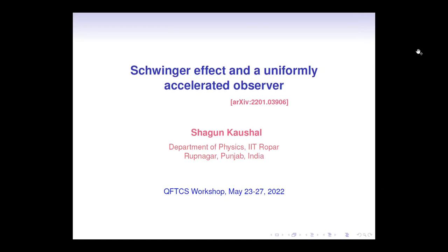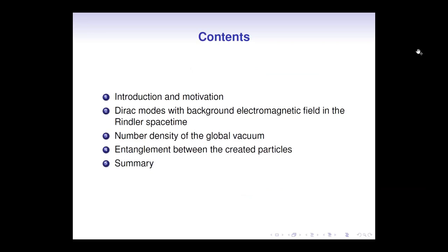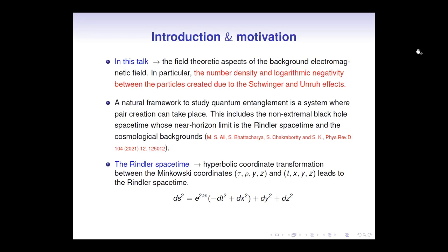First of all, I would like to thank all the organizers for arranging such a nice workshop and for giving me the opportunity to present here. Today I will talk about the Schwinger effect in a uniformly accelerated observer. I will start with some introduction and motivation, then discuss the Dirac modes with background electromagnetic field in Rindler spacetime, then move to the number density of the global vacuum, then discuss the entanglement between the created particles, and at the end I will summarize my talk.